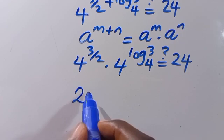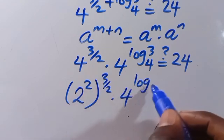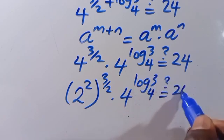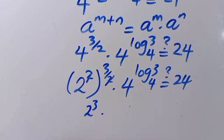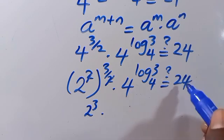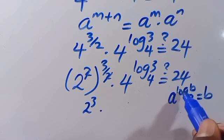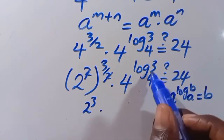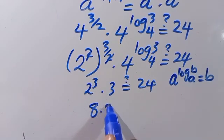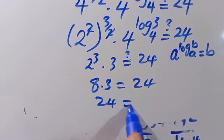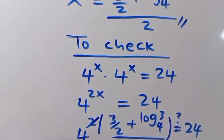We can write 4 as 2 squared, so 4 to the power of 3/2 becomes 2 to the power of 3, which is 8. And using the identity a to the power of log_a(b) equals b, since the base matches, 4 to the power of log₄3 equals 3. Therefore 8 times 3 equals 24, confirming 24 equals 24. Since the left-hand side equals the right-hand side, the value of x we obtained is correct.